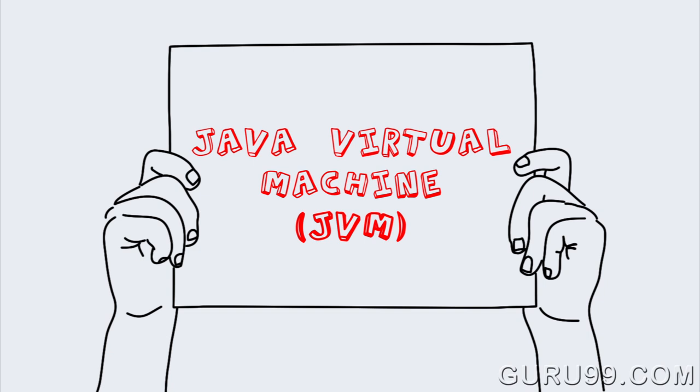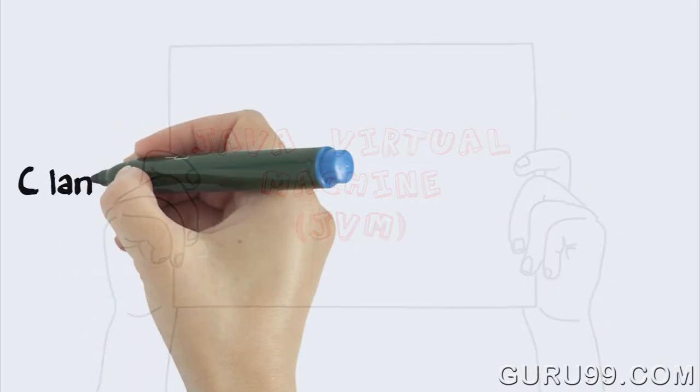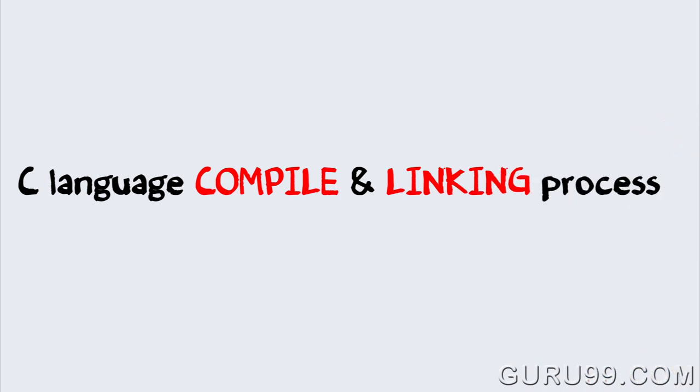To understand the compiling process in Java, let's first take a quick look at the linking process in C.